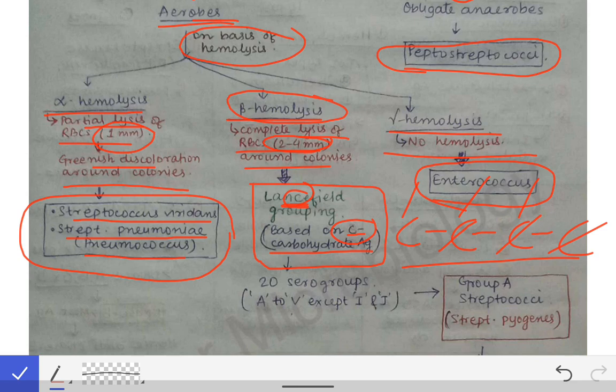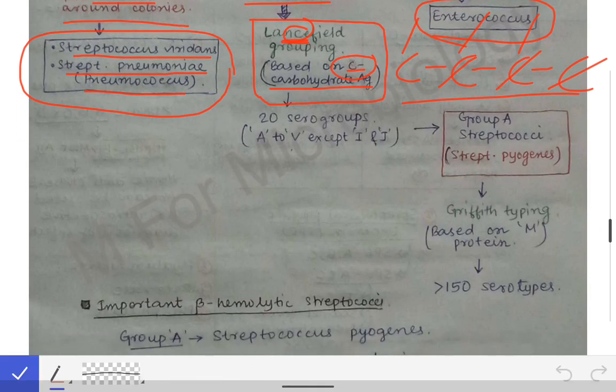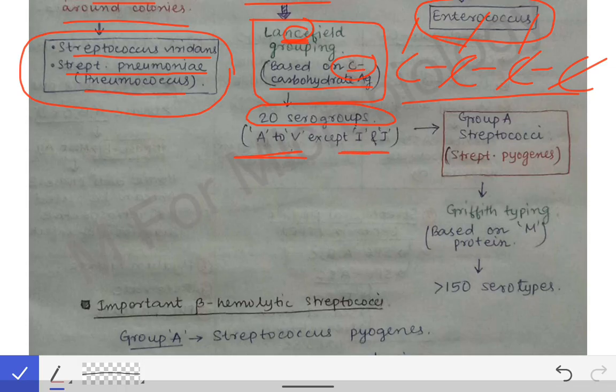Based on the Lancefield grouping, 20 serogroups of beta hemolytic streptococci were developed. All bacteria in the beta hemolytic group were classified into 20 serogroups, named from A to V, but with I and J excluded. There is serogroup A, B, C, and so on up to V, all based on the C-carbohydrate antigen present in the cell wall.